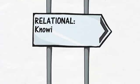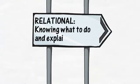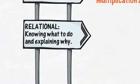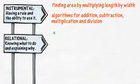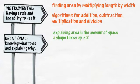Relational understanding means the child knows both what to do and they can explain why. The child develops deep understanding of concepts and the relationships between concepts. Examples of relational understanding include explaining that the area is the amount of space a shape takes up in two of the three dimensions.